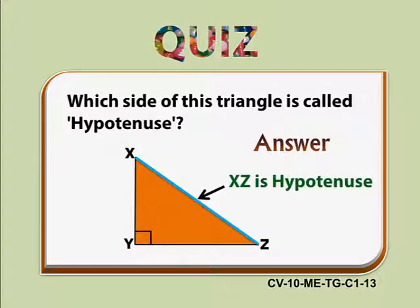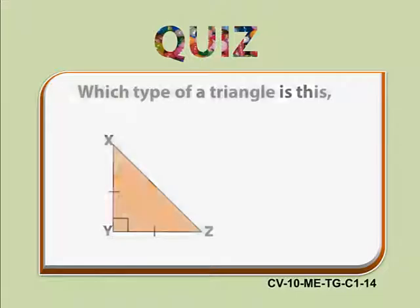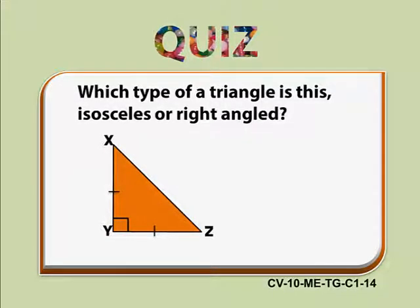Correct. The answer is XZ. XZ is the Hypotenuse. Question 3. Which type of a triangle is this? Isosceles or Right Angle Triangle?